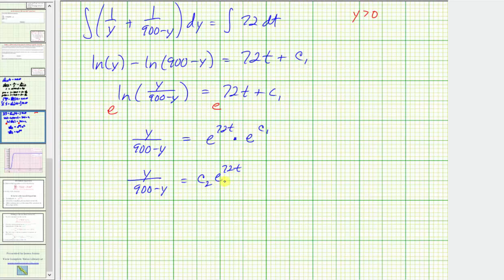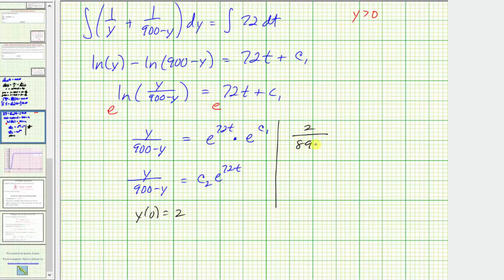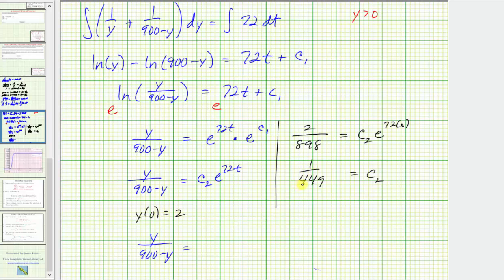Before solving for y, let's use the initial condition to find c sub two. We were told y of zero equals two, so substituting two for y and zero for t: on the left we have two divided by 900 minus two, which is 898, equals c sub two times e raised to the power of 72 times zero. Since e to the zero is one, we have c sub two equals two over 898, which simplifies to one over 449. So the equation becomes y divided by 900 minus y equals e raised to the power of 72t divided by 449.